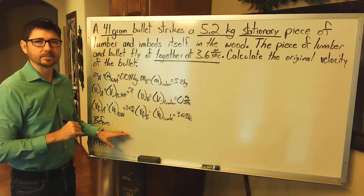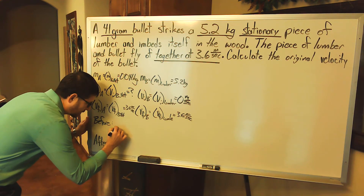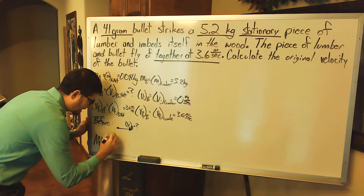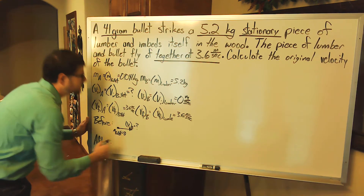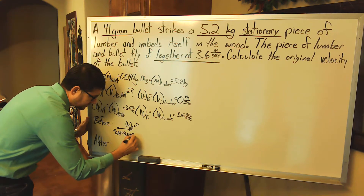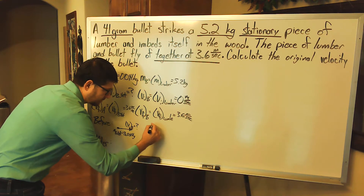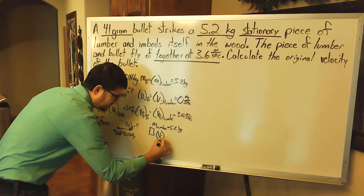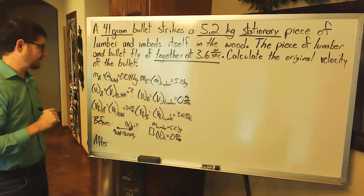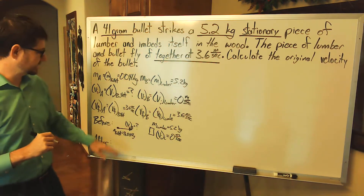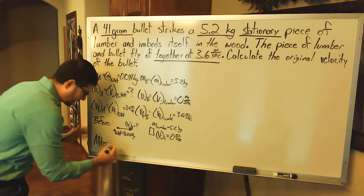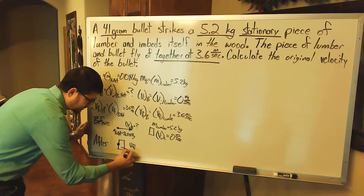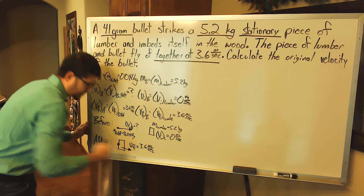Now let's draw some simple diagrams. We have a before situation where we have the bullet with an initial velocity — we don't know what it is. We know the mass of the bullet is 0.041 kilograms, and we have a stationary piece of lumber. The mass of the lumber is 5.2 kilograms and the initial velocity of the lumber is 0 meters per second. Then we draw a diagram to represent the situation after the collision, where we have our piece of lumber and bullet together, and the final velocity is 3.6 meters per second.